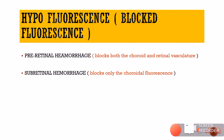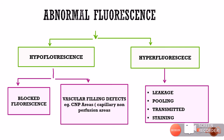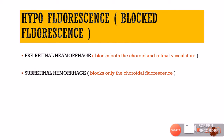There are basically two types of hypofluorescence. The first is blocked fluorescence because of a blocking effect, and the second is because of filling defects. Either there is something blocking us from seeing the underlying fluorescence, or there is some filling problem in the vessels leading to hypofluorescence. Blocked fluorescence is whenever there is blood or other opacities blocking the underlying choroidal fluorescence.